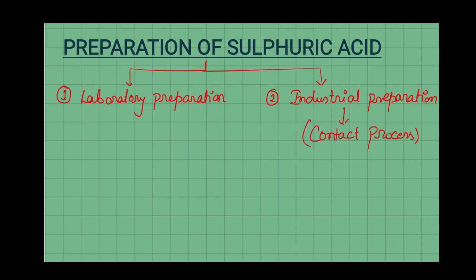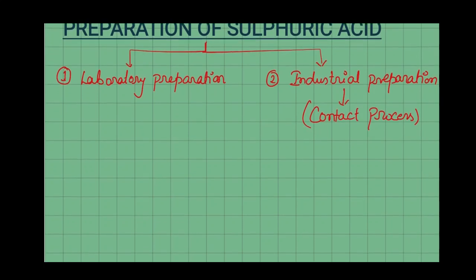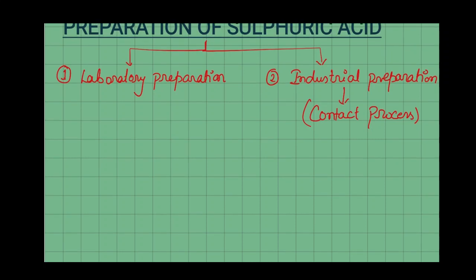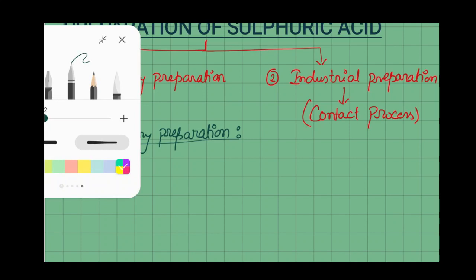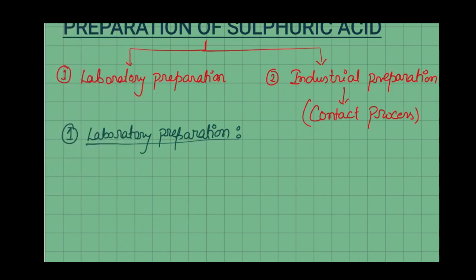We will try to discuss both these processes — laboratory preparation and industrial preparation — one by one. First, let us come to laboratory preparation. In laboratory preparation, we generally do the oxidation of sulfur, and we get sulfuric acid.